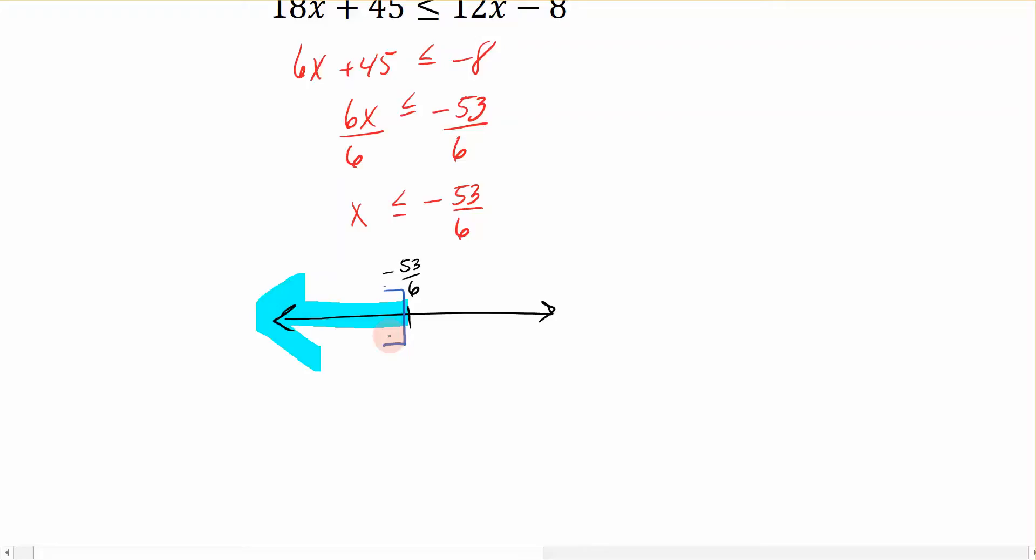Now to write the solution in interval notation, since this goes off to negative infinity, it would look like negative infinity, comma, negative 53 over 6, bracket. And that is the two parts to the solution that I'm looking for, the graph as well as the interval notation.